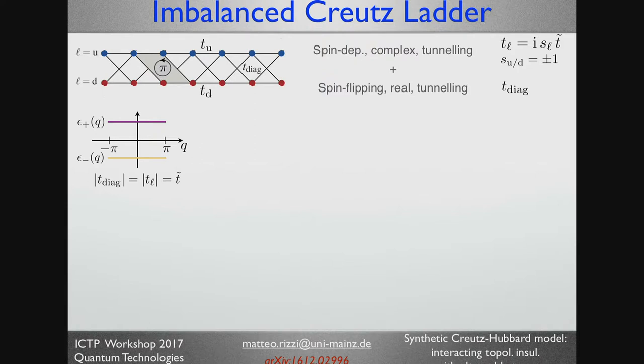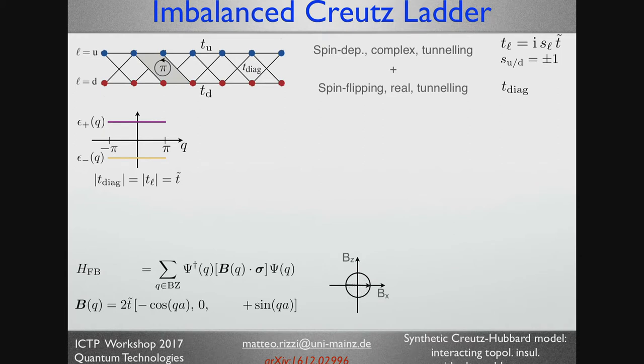Plus you want to have a real spin-flipping tunneling between the neighboring sites. And if you sit down and do the Fourier transform of that, you will soon realize that this is a model that describes two flat bands. Two because the unit cell has two sides, and they are flat in the case the two intensities are equal to each other. And a way to see that is actually to look indeed in the Fourier transform and see that you can write the Hamiltonian as a pseudo-magnetic field times the Pauli matrices. And the pseudo-magnetic field has the same amplitude everywhere and it's rotating once around the origin.